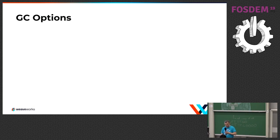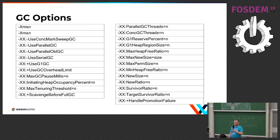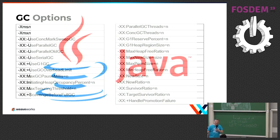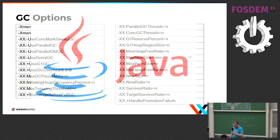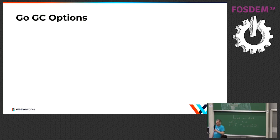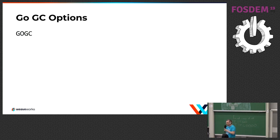Let's look at the options to tune the garbage collector. These are all the options you get to tune the garbage collector in Java - all the ones I could find in about 20 minutes of Googling. Now let's look at the list of options you get to tune the garbage collector in Go. There is one option.